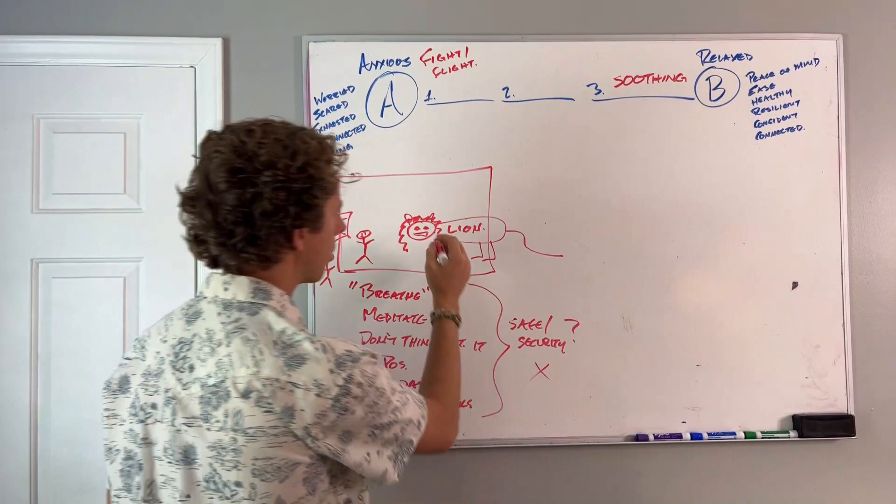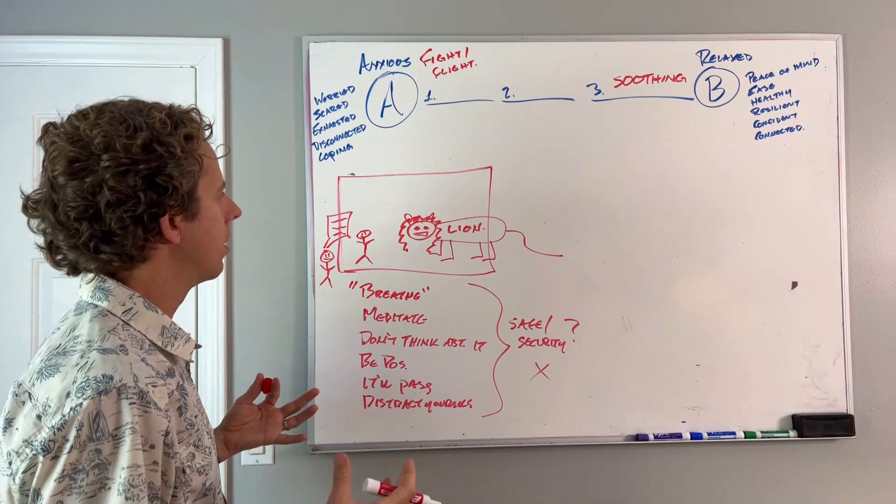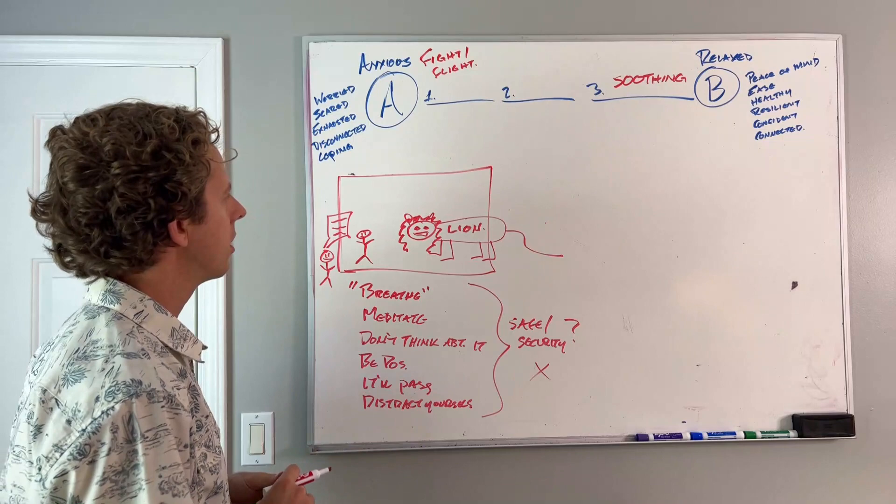When you're in the room with a threat, your nervous system kicks into your sympathetic state. Your logic goes to the background. Your emotional reactivity comes to the foreground. And your entire being, the way that your brain is actually functioning, is focused on survival. It's focused on navigating the situation and getting away from this threat.